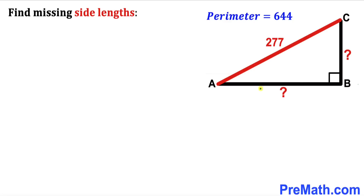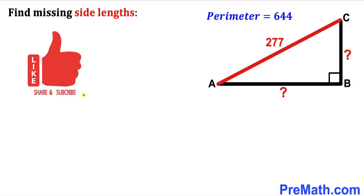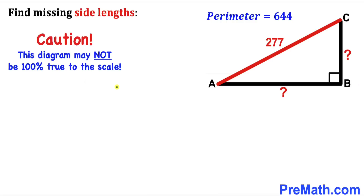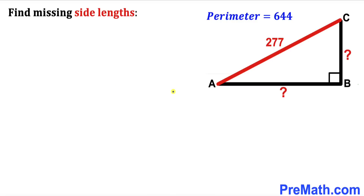Welcome to PreMath. In this video we have a right triangle ABC such that its hypotenuse AC is 277 units and the perimeter of this triangle has been given to us as 644 units. Our task is to calculate the missing sides AB and BC. Please don't forget to give a thumbs up and subscribe, and keep in mind that this figure may not be 100% true to scale. Let's go ahead and get started.